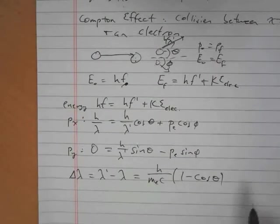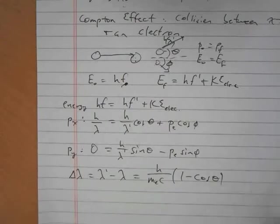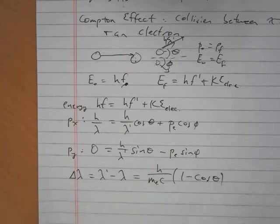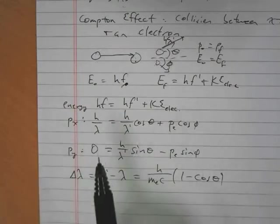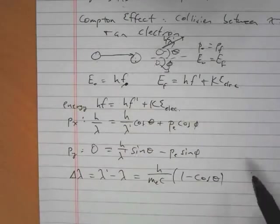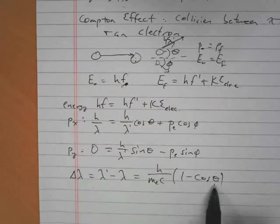So you can see when theta equals zero, that would be the case of the photon continuing on in a straight path, which means it hasn't collided. So if theta is zero, then cosine theta is one, and we have no change in wavelength. That makes sense, because theta is zero, that means there was no collision. And we have the maximum change in wavelength if theta is 180. If the photon bounces straight back, it gives the most energy to this electron, and therefore it loses the most energy. And so then its wavelength changes by the most significant amount, because cosine of 180 is negative one, which means that the change in wavelength would be two times h over mass of the electron times c.